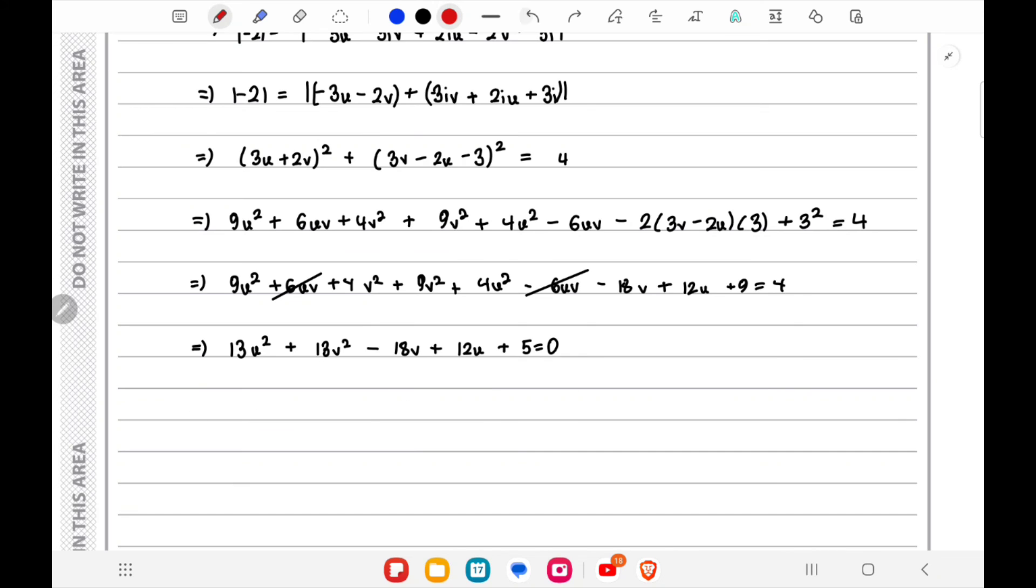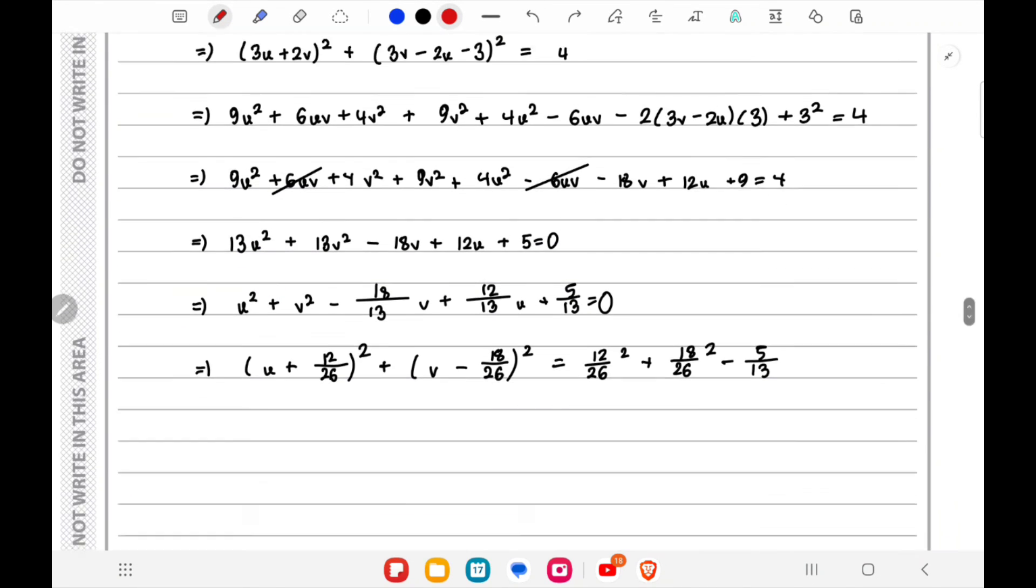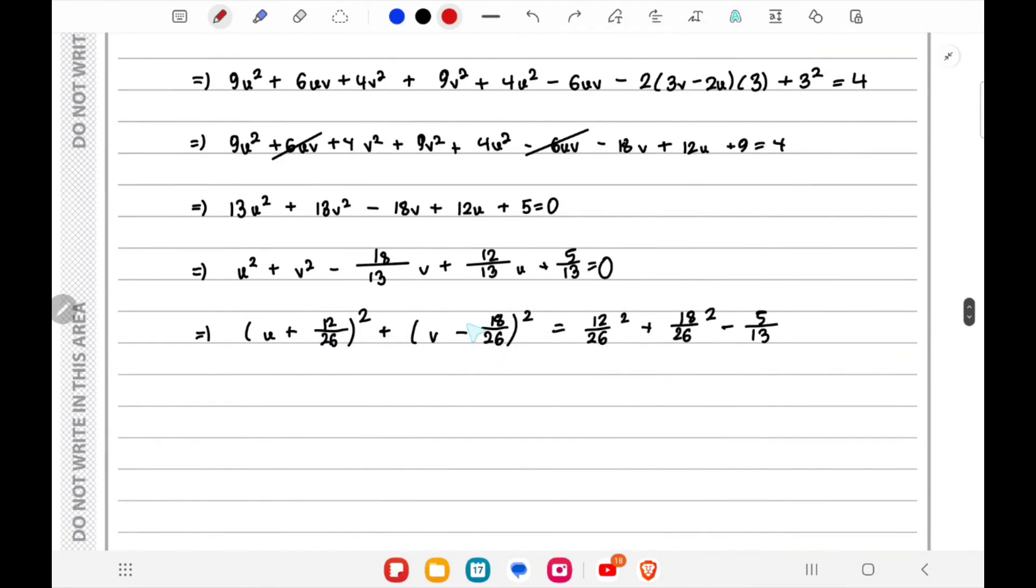We'll complete the squares for u and v, separating u and v and taking the 13 in front of them out. If I complete the squares, I'll get this equation, which you can see is the equation of a circle with center (-6/13, 9/13) and radius √(4/13).